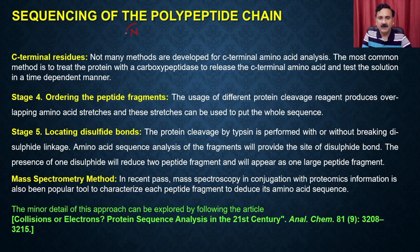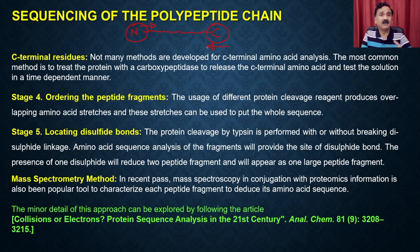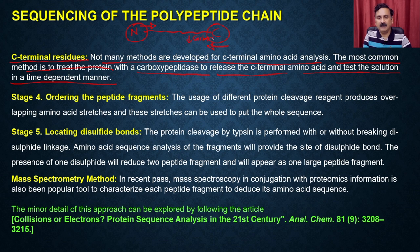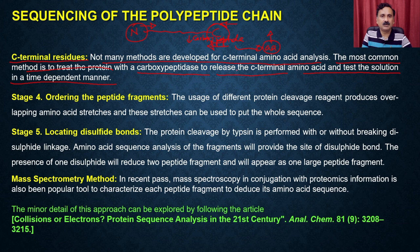The protein has two ends — the N-terminus and the C-terminus. We have discussed Sanger's method and Edman degradation method for identifying N-terminus amino acids. You can also do sequencing from the C-terminus to identify the C-terminal residues. Not many methods are developed for C-terminal amino acid analysis. The most common method is to treat the protein with carboxypeptidase — a specific enzyme which releases amino acids from the C-terminal side. Once the amino acid is released, you can identify it by Sanger's or Edman degradation methods.